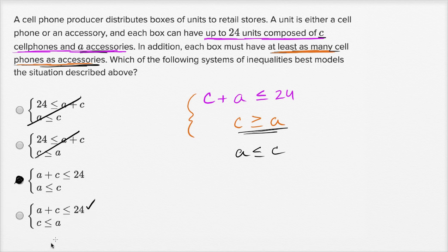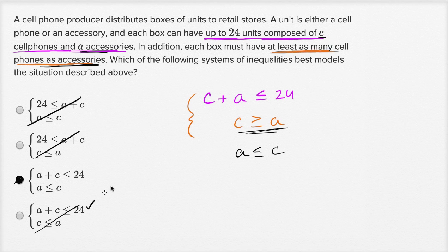This last choice has the first constraint right, but then it says the number of cell phones has to be no more than the number of accessories — or in other words, at least as many accessories as cell phones — which is the opposite of what the constraint says. So we can rule that one out as well.